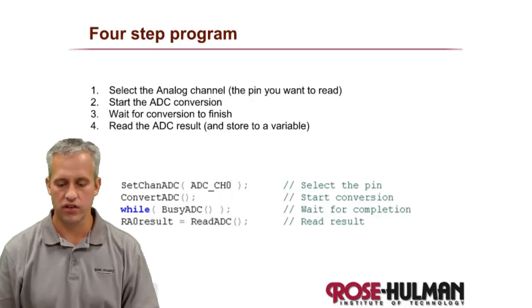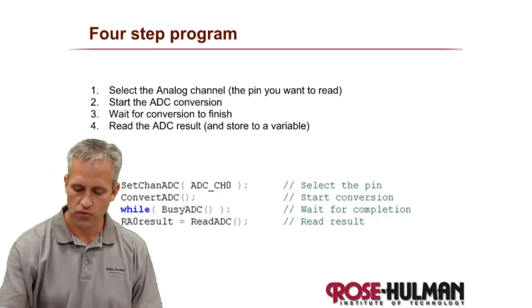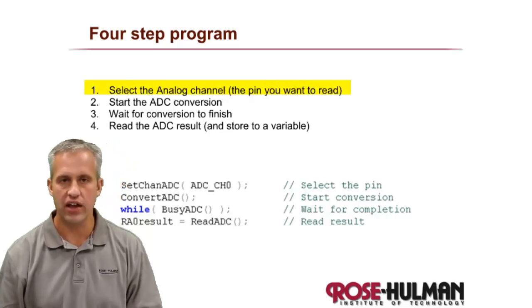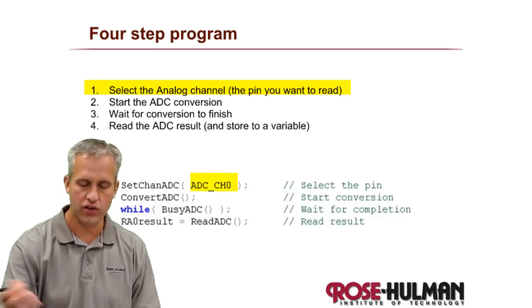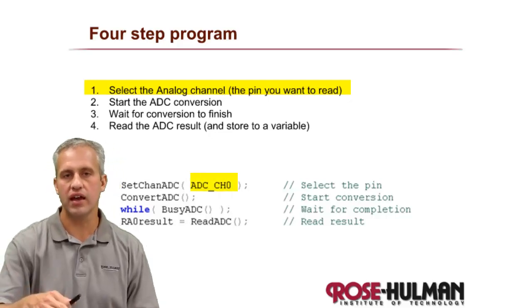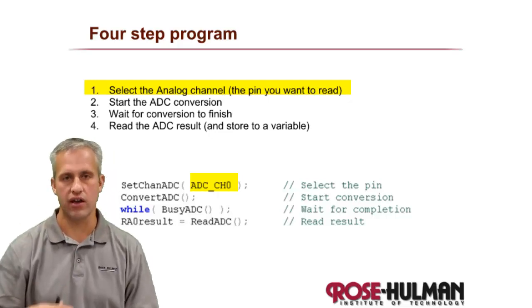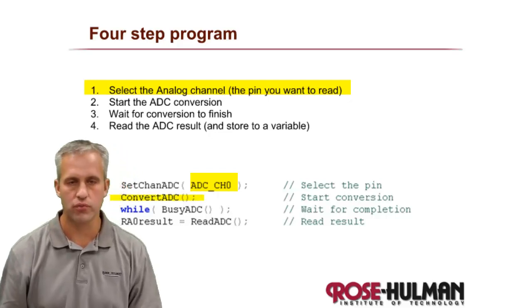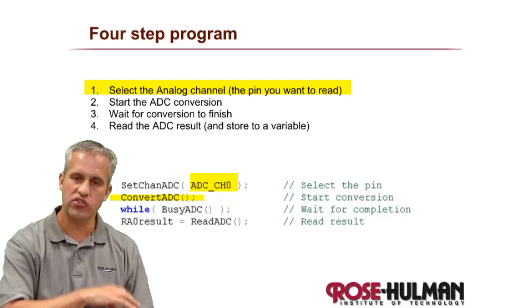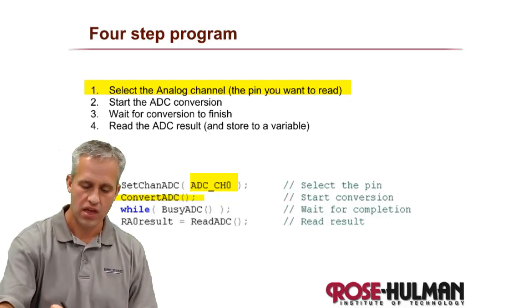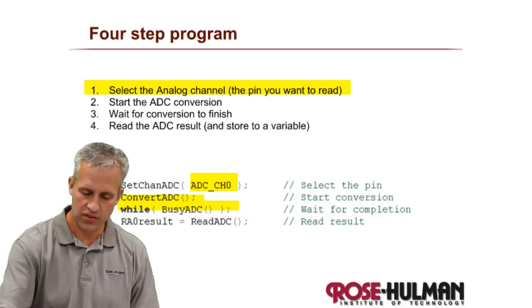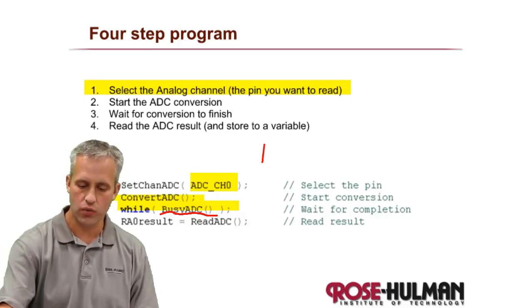The way that you do an analog to digital conversion is this simple four-step program. Step number one: select which channel you want to read, so you say which pin you're going to read. The ADC can only do one at a time, so you set it. Next is you start the conversion process, so you say convert ADC. It knows to use that channel you selected. You then simply wait for it to finish.